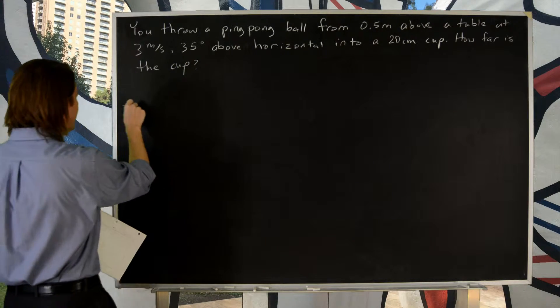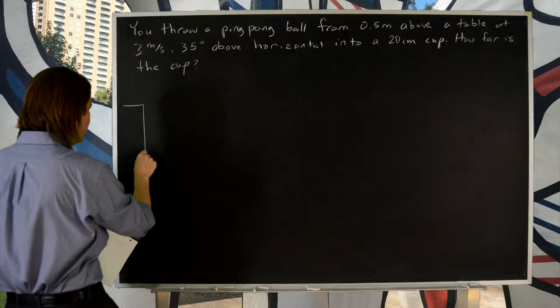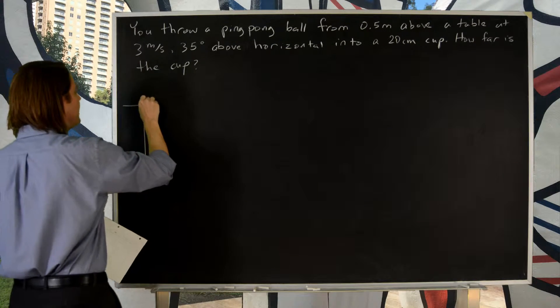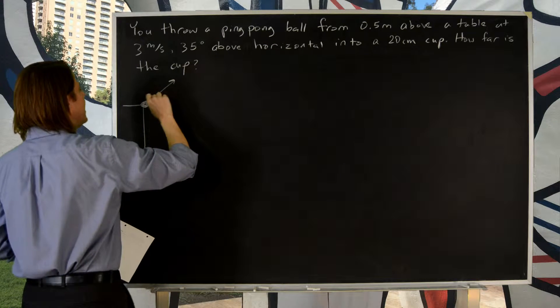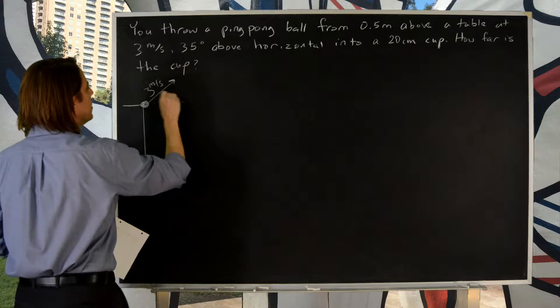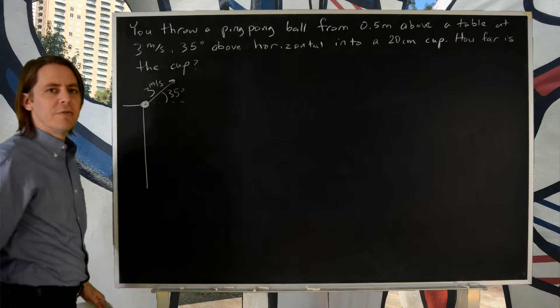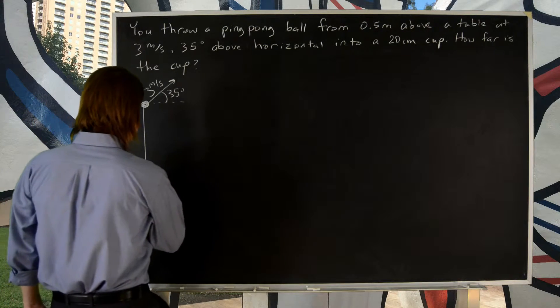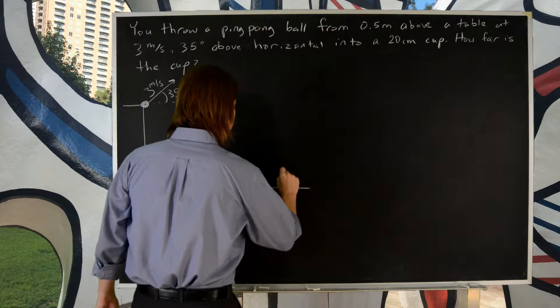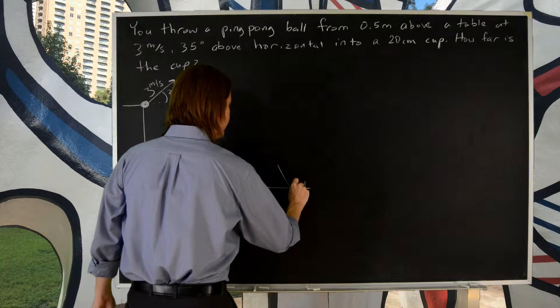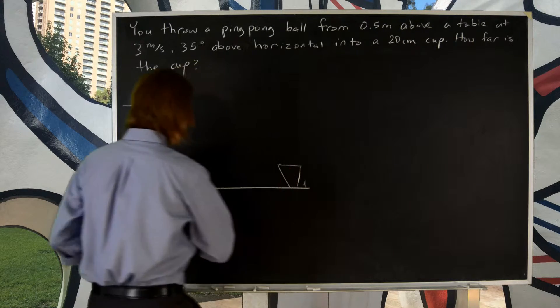You're throwing the ping-pong ball from 0.5 meters, which basically represents how high your hand is above the table. And you're given that you throw it at 3 meters per second at an angle of 35 degrees. You're given the initial velocity. And the idea is you throw it into a cup that sits some distance away.